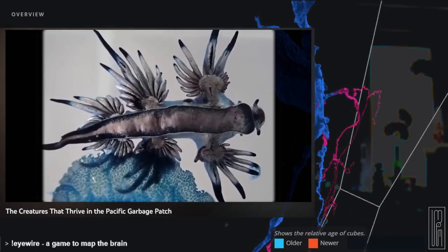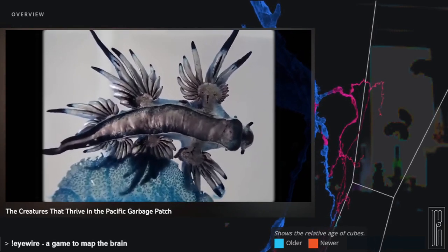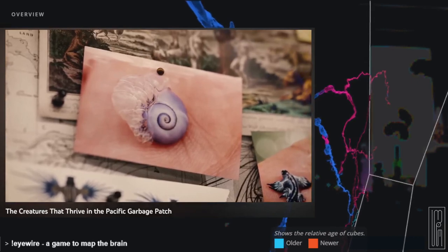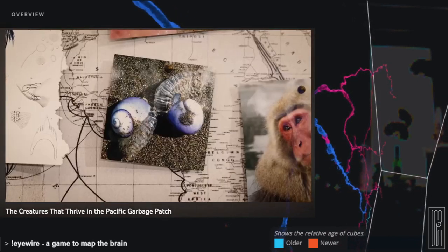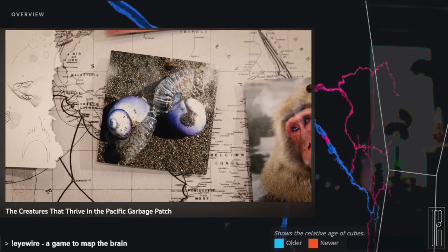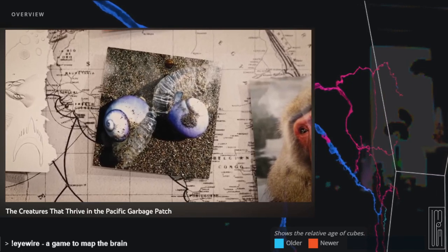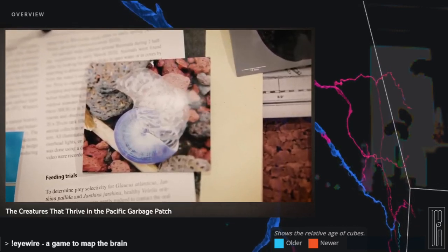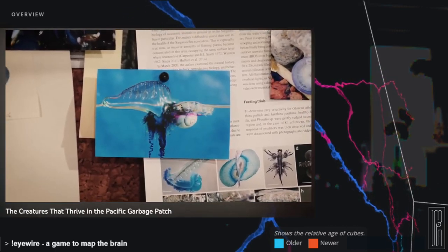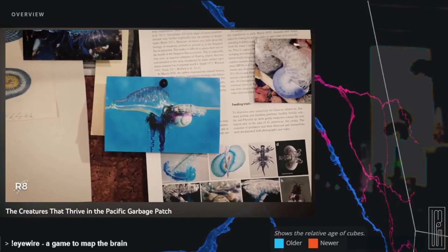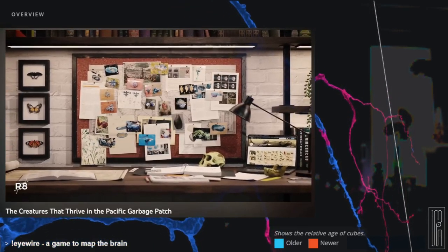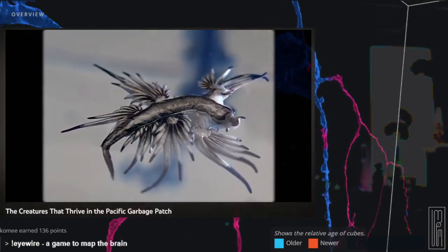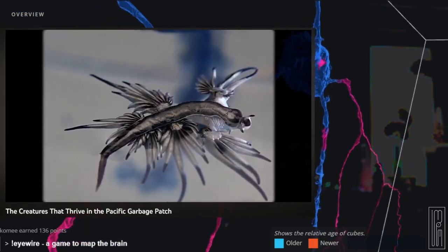But the blue sea dragon isn't the only creature that eats Portuguese man-o-wars. So do the violet snails, Janthina janthina, which also can't swim. These snails have to create bubble rafts from their own mucus just to stay afloat. And must be extremely careful when they're consuming prey. If the violet snails eat too much of their prey and don't have a stable raft of bubbles, both prey and predator will sink.